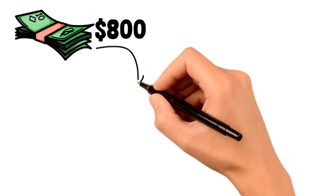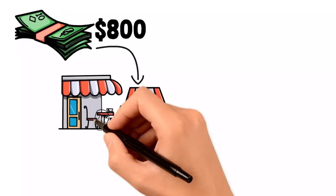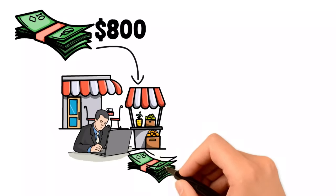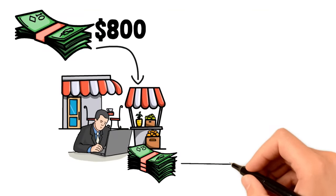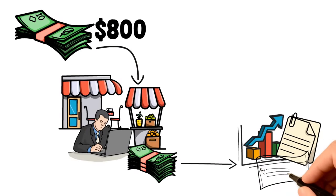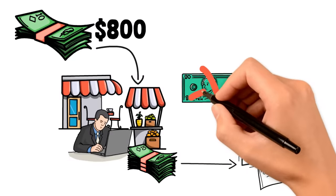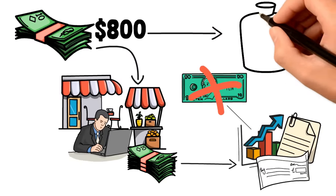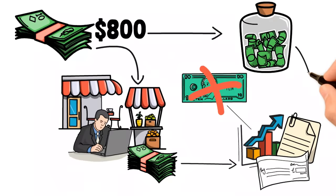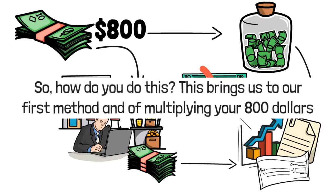It would be best if you invest in more active ways of earning income. Once you start earning more money from your active investment, you can channel that extra cash into other forms of passive investment like bonds and stocks. Passive income is the best, but it's useless if you're only bringing in less than $10 every month. This is why you should first think of multiplying your $800 into a larger sum so that you can make better returns from stock investments. How do you do this? This brings us to our first method of multiplying your $800.